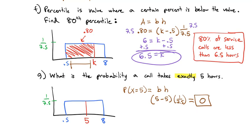We're focusing today on finding probabilities from the uniform distribution and this idea with continuous distributions that probability is area under the curve. Take a look at the assignment to practice a few of these, and we will see you in class to continue working with the uniform distribution.